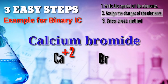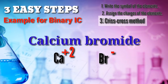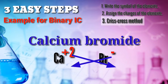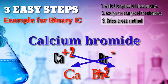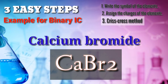How about Br? It is negative 1. Then, perform the criss-cross method as our third step. Just simply exchange the charges of our calcium and bromine. As you can observe, the positive sign is being removed because it will no longer serve as a charge but as a subscript of the compound or element. Therefore, our final formula for calcium bromide is CaBr2.